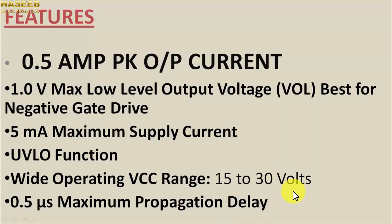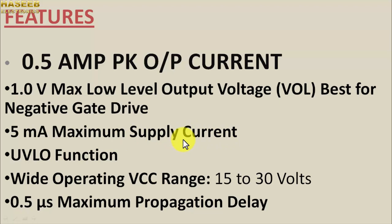If you are new to my channel and have not subscribed, please subscribe and press the bell icon. The HCPL-3150 has 0.5 ampere peak output current, 1 ampere maximum low-level output, and a negative gate drive to bring the IGBT into cutoff state. It has 5 milliampere maximum supply current. This IC has a built-in driver controller with 5 milliampere chip bias sync current to drive the driver transistors. It also has a UVLO — under voltage lockout — function: when the VCC voltage drops below its threshold, it cuts off the output to protect the IGBTs. The wide VCC operating range is 15 V to 30 V.